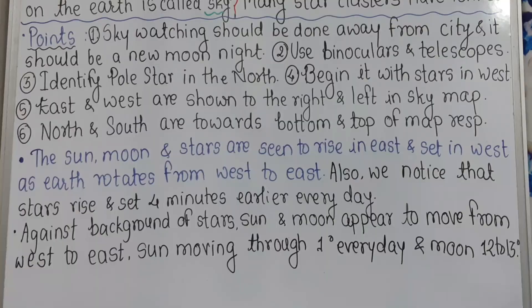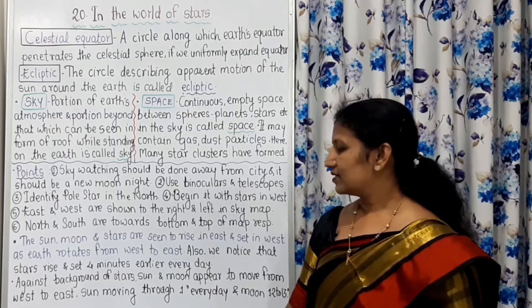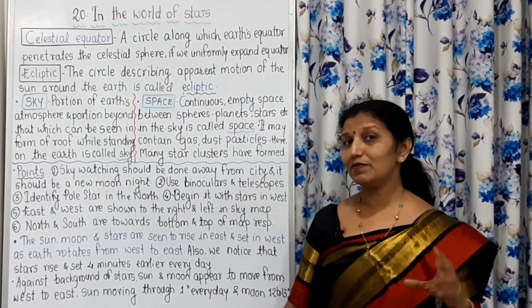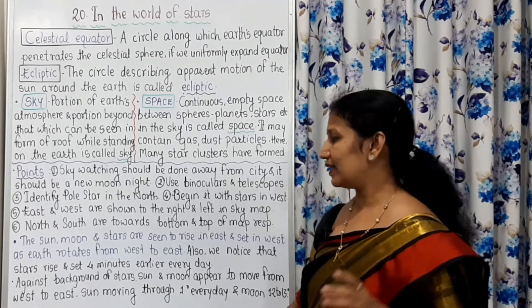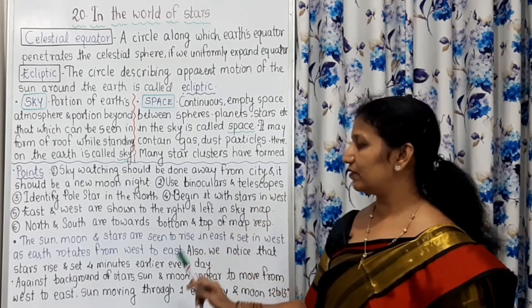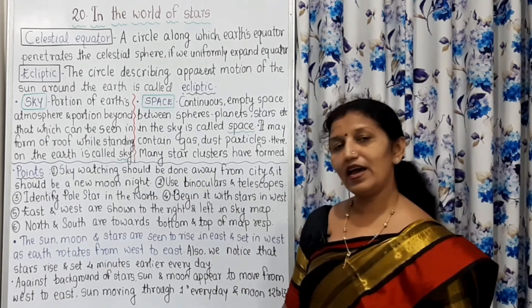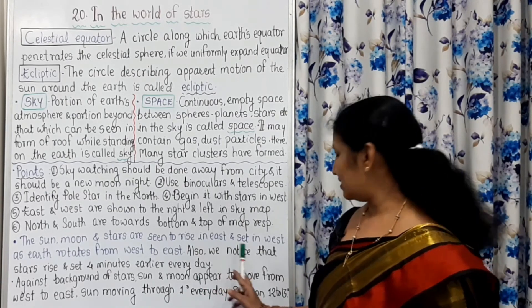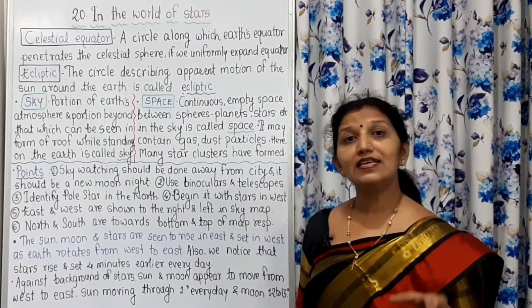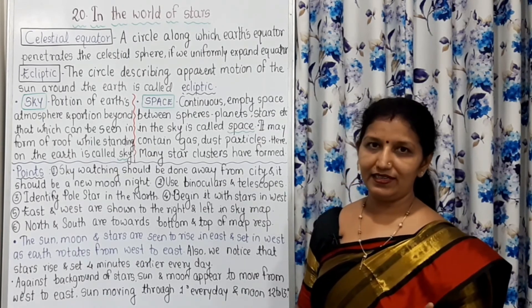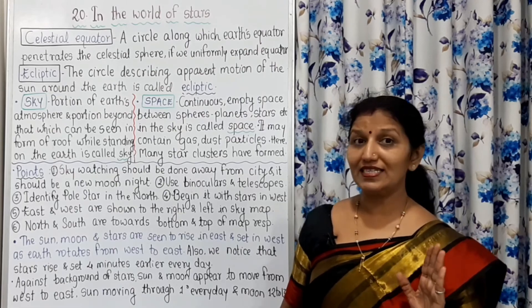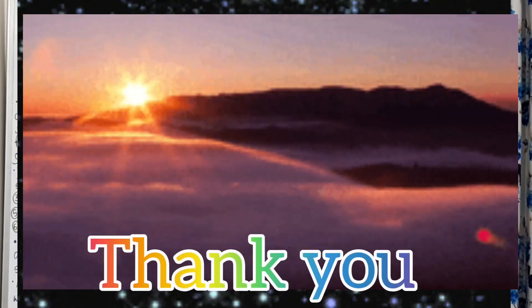Against the background of stars, the sun and moon appear to move from west to east. The sun appears to move through one degree every day, while the moon moves 12 to 13 degrees every day. These points should be remembered while doing sky watching and studying the world of stars.